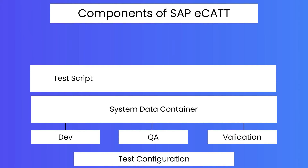Then we create something called a Test Script. What is a Test Script in SAP eCATT? The test script takes care of executing the tests. In SAP eCATT test scripts, we have commands such as TCD, RFC, and DB Read — different types of commands. Based on your purpose, you use the appropriate set of commands to perform test execution.